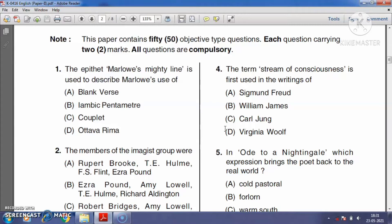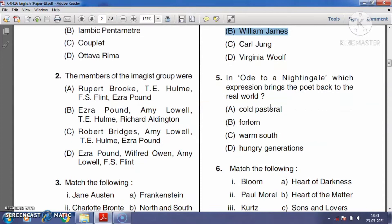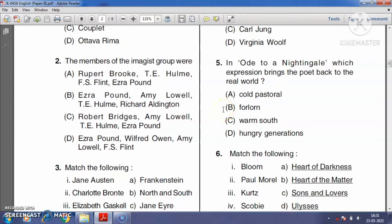Question number five: In 'Ode to a Nightingale,' which expression brings the poet back to the real world? Cold pastoral, forlorn, warm south, or hungry generations? The right answer is option B, forlorn.